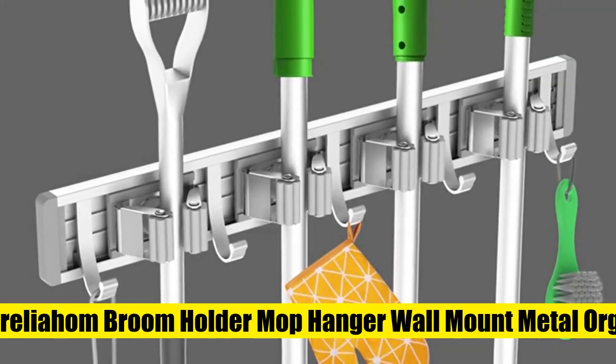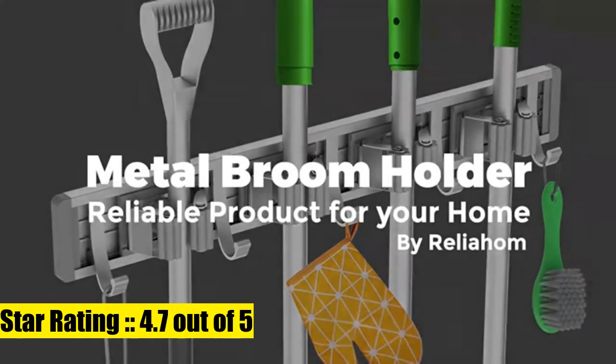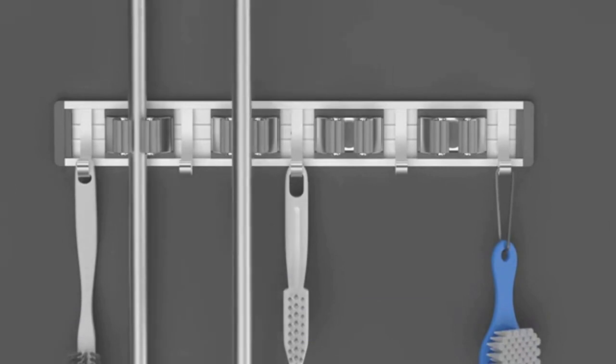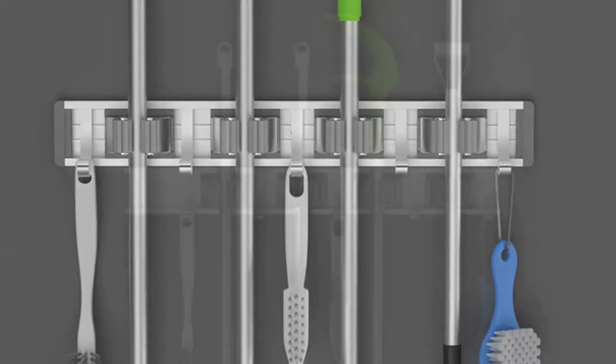Rely Home broom holder: mop holder and mop hanger, wall mount metal organization, garage storage system, garden and kitchen tool organizer. Four racks with five hooks. Sturdy and durable, made of metal baseboard, stainless steel grip, and metal hooks. Strong, waterproof, and durable.